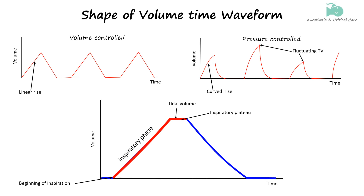When the ventilator ceases to deliver air, the patient begins to exhale, starting the expiration phase. During this phase, the volume of air in the lungs decreases as it is expelled, and this is reflected on the waveform as a downward slope. The steepness of this slope is influenced by the patient's lung compliance and airway resistance. In individuals with healthy lungs, the volume typically decreases smoothly and rapidly. In contrast, if there is increased airway resistance or poor lung compliance, the slope may be less steep, indicating slower exhalation.